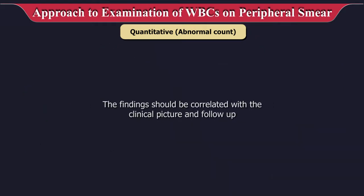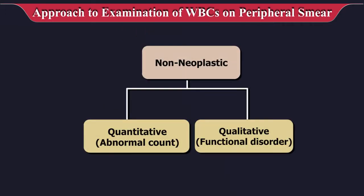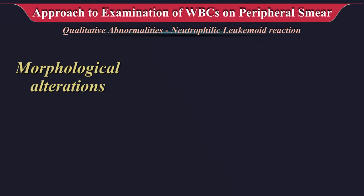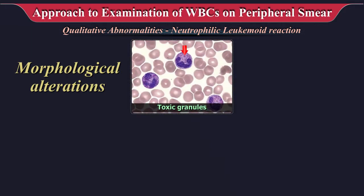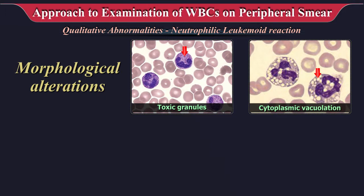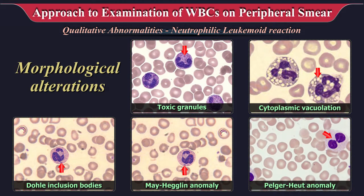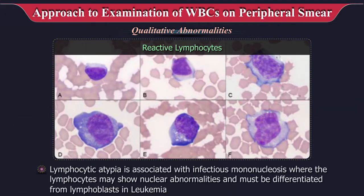The findings should be correlated with the clinical picture and follow-up is a must. Qualitative or functional abnormalities are related to morphological alterations like presence of toxic granules, cytoplasmic vacuolation, Döhle inclusion bodies, May-Hegglin anomaly, Pelger-Huët anomaly, etc. Atypical lymphocytes may be associated with infectious mononucleosis, where the lymphocytes may show nuclear abnormalities which must be differentiated from lymphoblasts in leukemia.